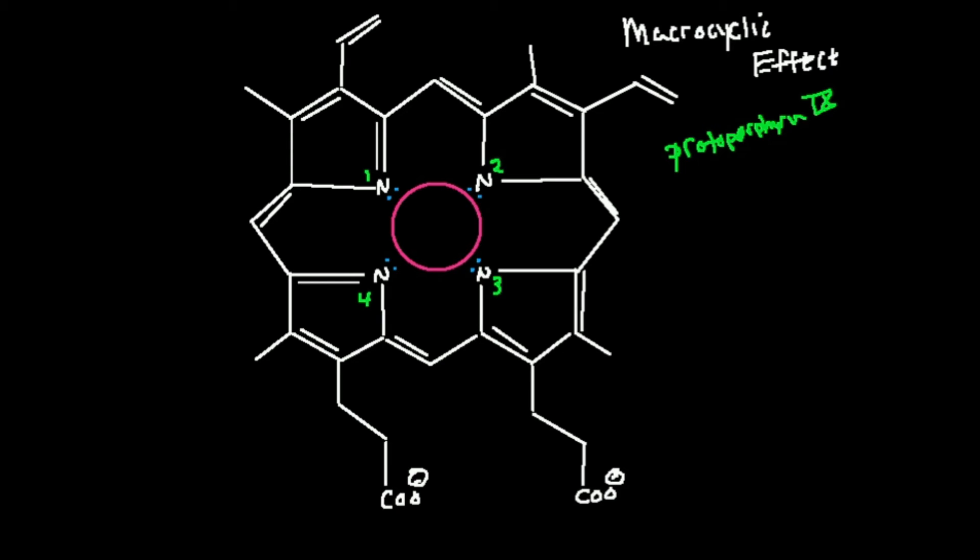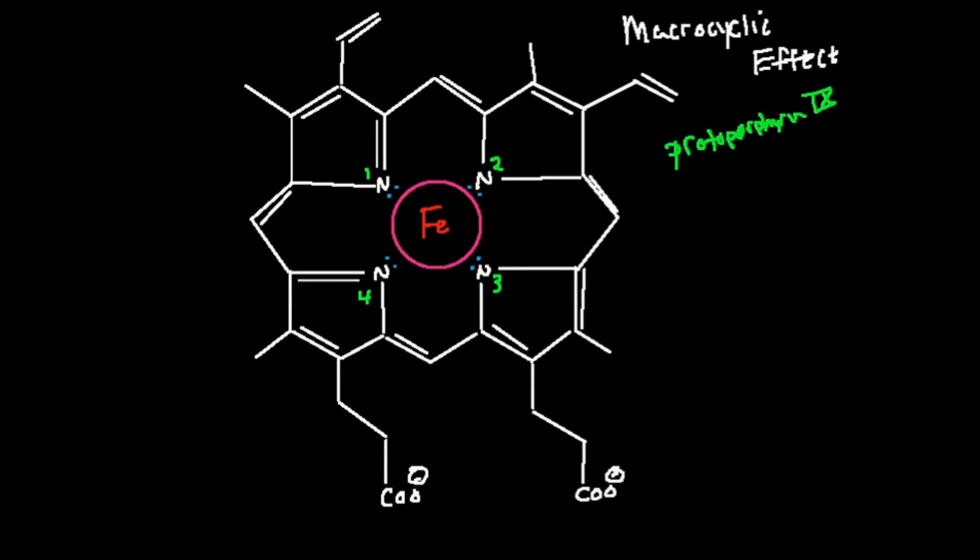But usually, because these rings are rigid, they're usually specific for only one or two metals. And in this case, the metal is iron. And it can be iron two plus or three plus, although generally it binds in the two plus state. Iron fits in here exactly.